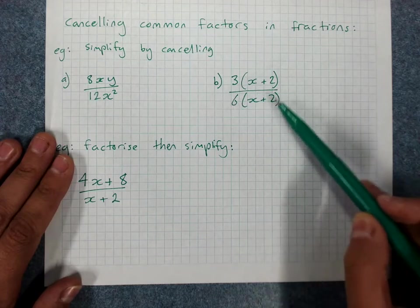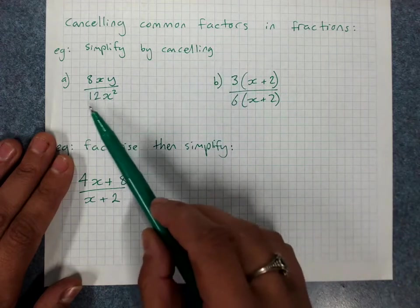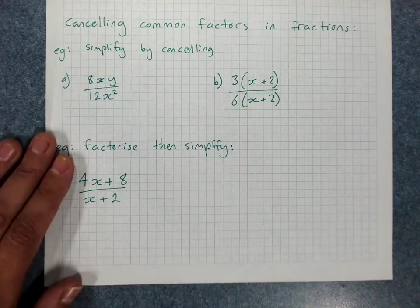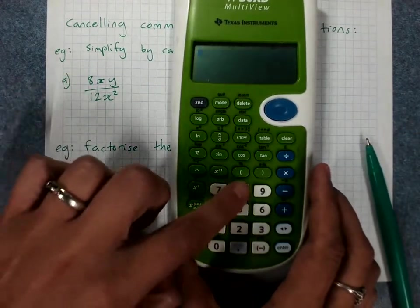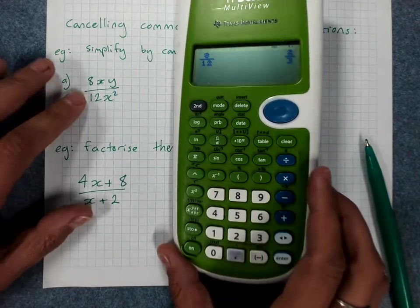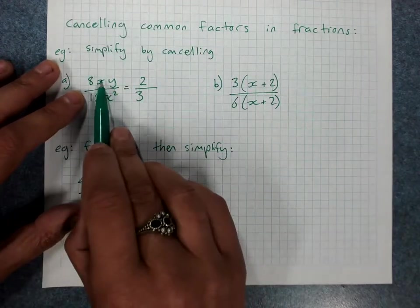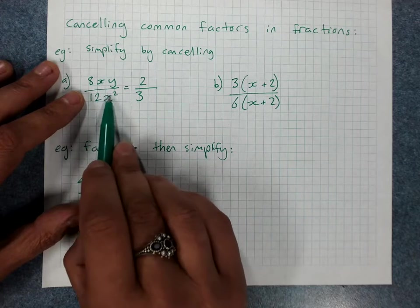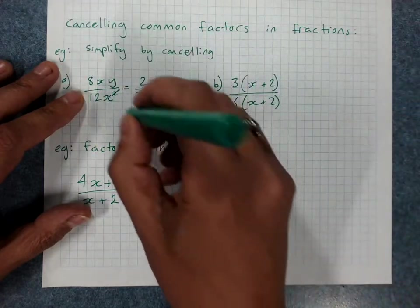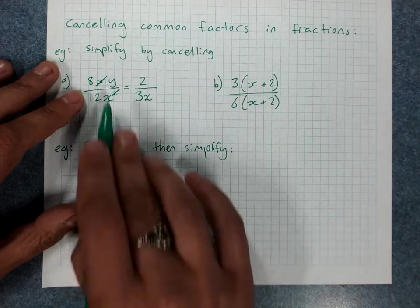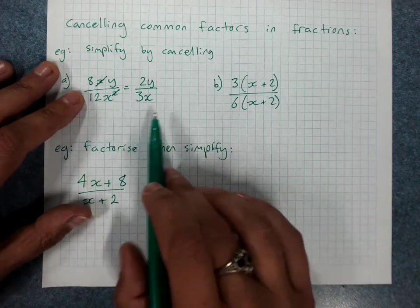Because a whole bracket can be a common factor. So a reminder that when we simplify by cancelling, any just whole numbers on their own, we simplify using our calculator. So I'll need to check 8 over 12. So the numbers there will come down to 2 over 3. x on the top and x squared on the bottom, so I can get rid of one of those x's. This is x times x. So that'll just cancel. With that x, I'll be left with an x on the bottom. And y, there's nothing to cancel with. So I've got 2y over 3x. And we've been cancelling these recently and doing very well.